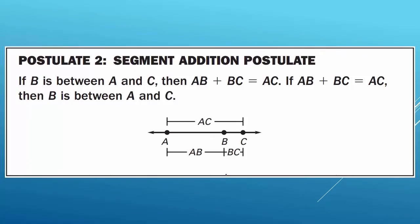Postulate 2: Segment Addition Postulate. If B is between A and C, then AB plus BC is equal to AC. If AB plus BC is equal to AC, then B is between A and C. Looking at this picture, our entire length is AC, and AC is made up of line segment AB plus line segment BC.